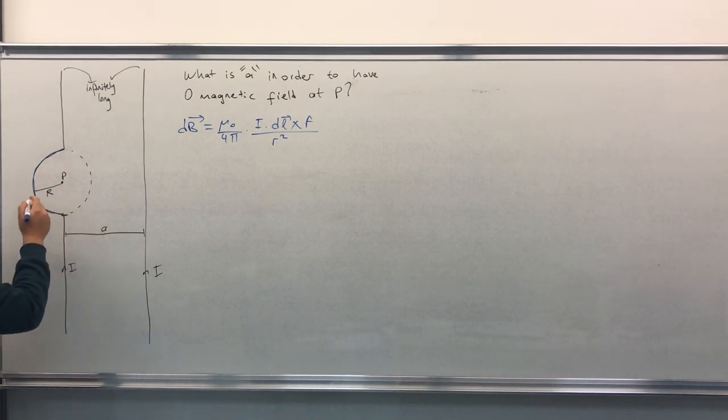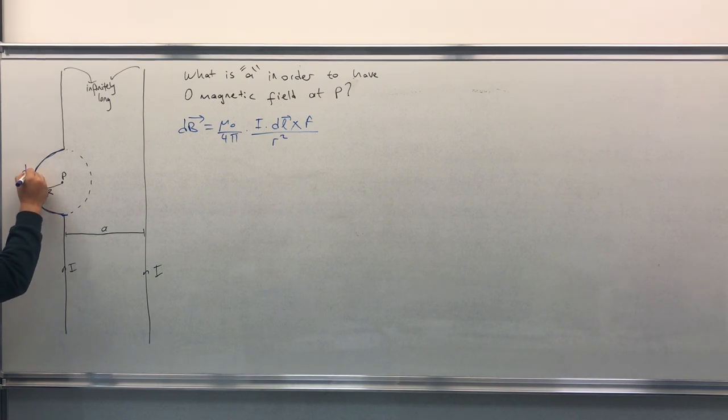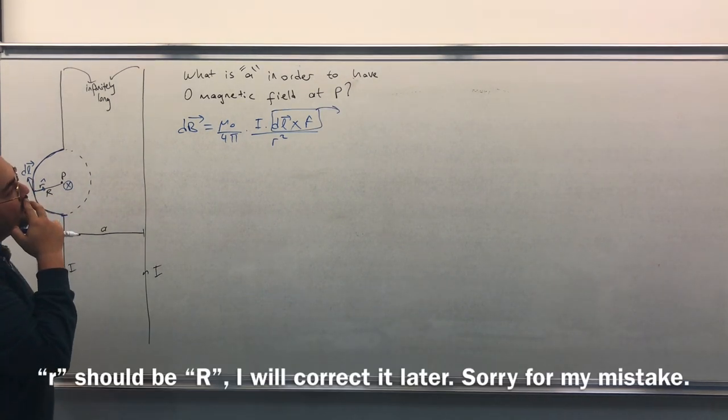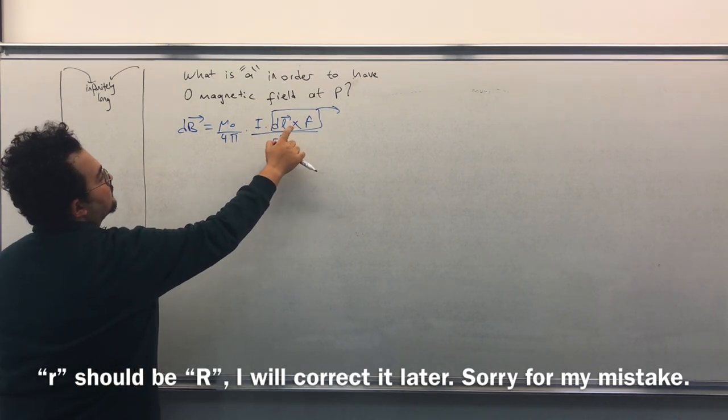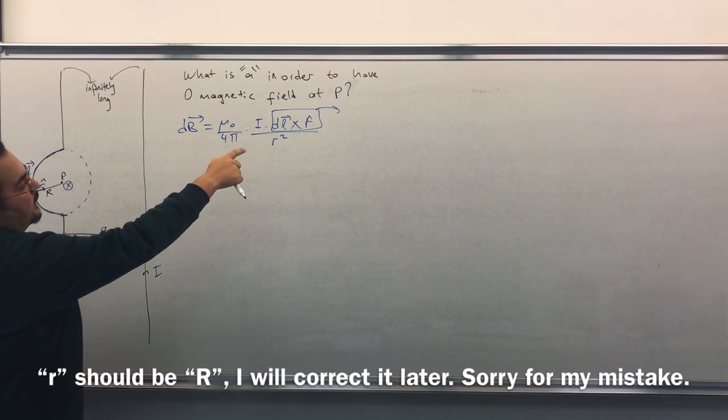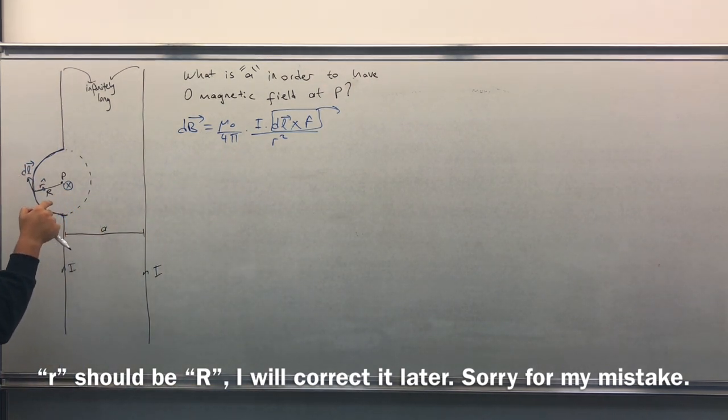So by the way this is dL, and this is R. We will use the right hand rule. So we will have the magnetic field towards the board. This part will determine the direction of the magnetic field. We found it, it will go into the board.